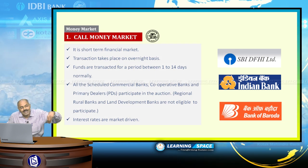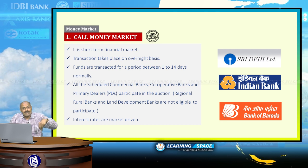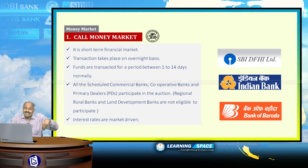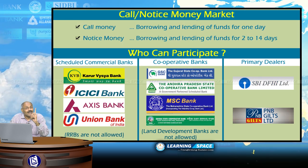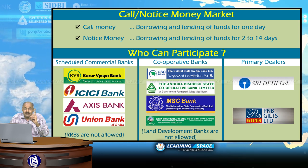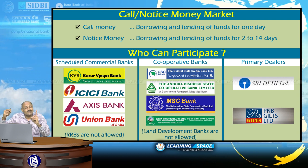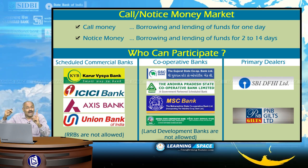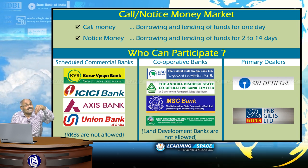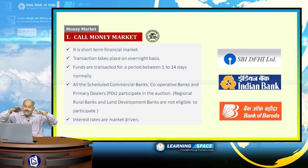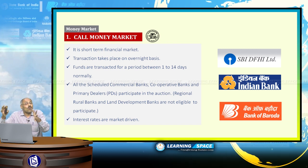What is call money? Call money is when somebody borrows for a few days. If a bank is borrowing for one day, it is call money. If a bank is borrowing for two days to 14 days, it is notice money. Broadly, this is categorized as the call money market. It is a short-term financial market where transactions take place on an overnight basis.